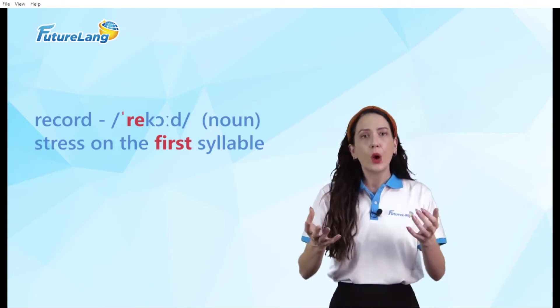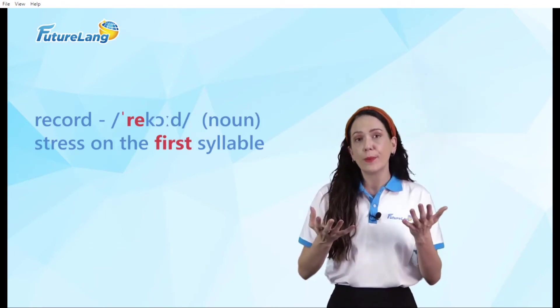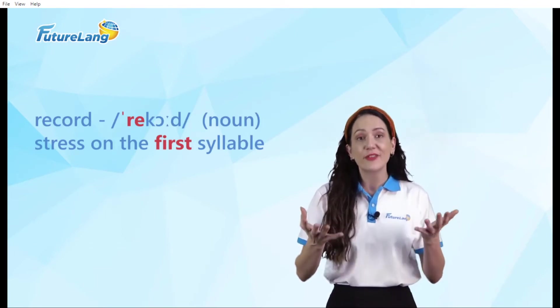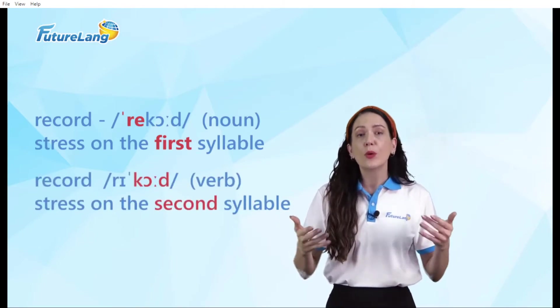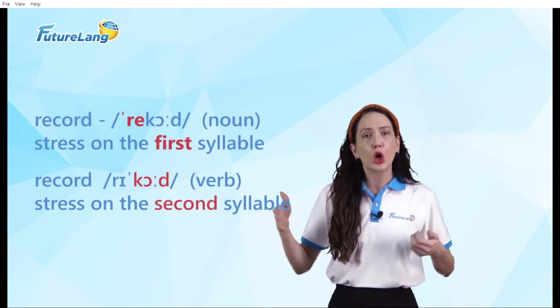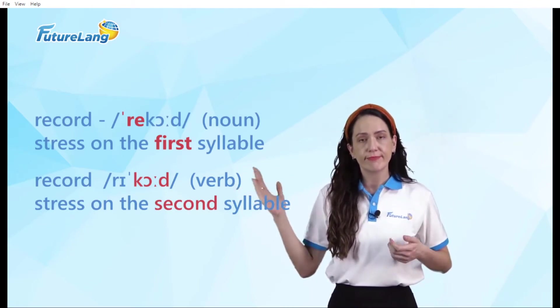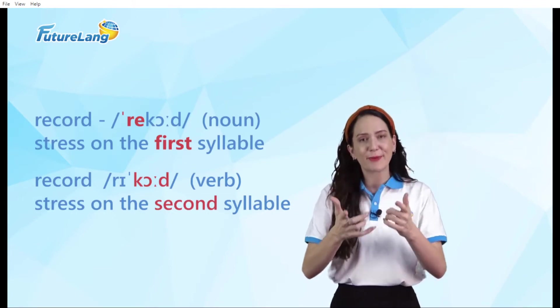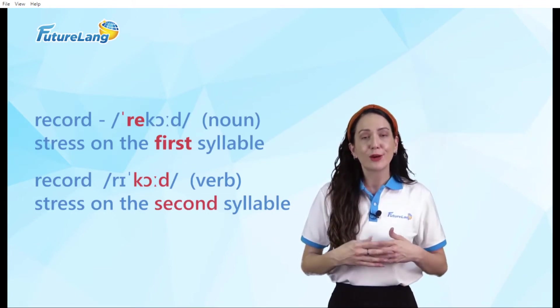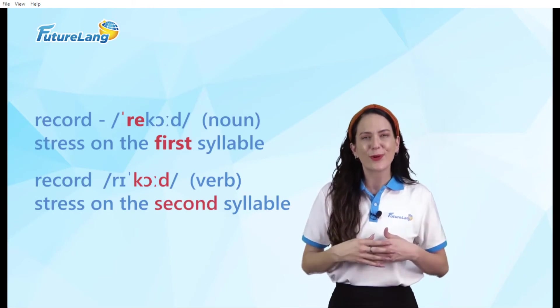However, when the word becomes a verb, the pronunciation is different. We read it record with the stress falling on the second syllable. Cord... Record. Now you give it a try. Record. Record. Great work guys.